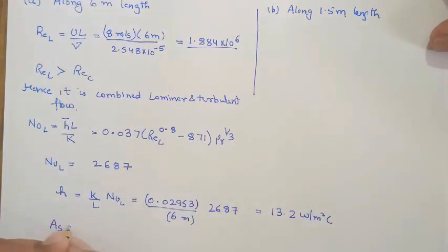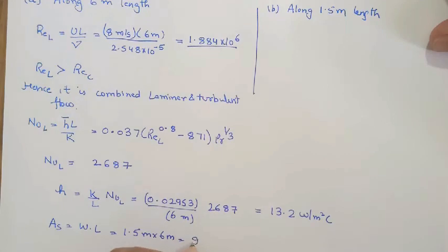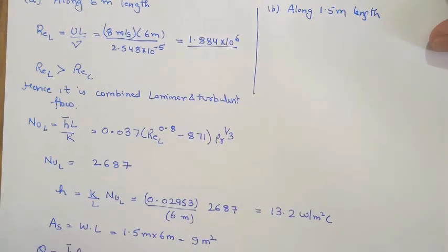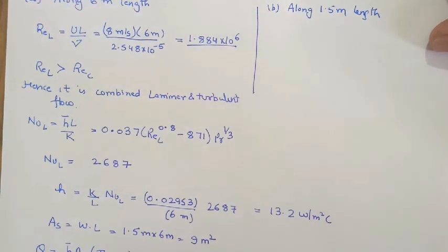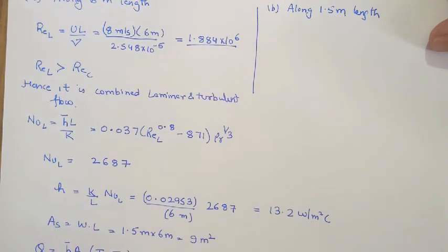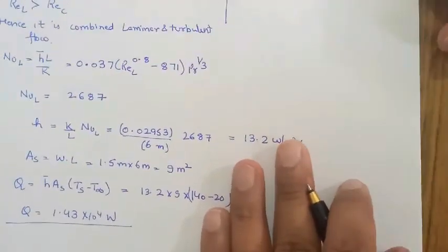The area is W times L, which is 1.5 meters times 6 meters, giving 9 meter square. The heat transfer Q equals H times As times (Ts minus T-infinity), which is 13.2 times 9 times (140 minus 20), giving Q equals 1.43 times 10 raised to power 4 watts.